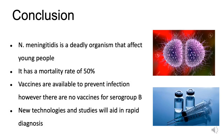Neisseria meningitidis is a deadly organism that mainly affects the younger population. It has a mortality rate of 50%, with almost half the people infected dying within 24 hours without treatment. Vaccines are available and are important in that they not only provide people with immunity, but also prevent the widespread transmission of serogroup B, as there is no vaccine for that group. It is therefore key that we understand how the pathogen works, its virulence factors, treatments, and methods by which we can accurately diagnose and protect our community.